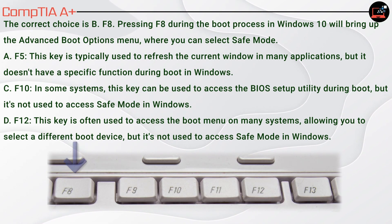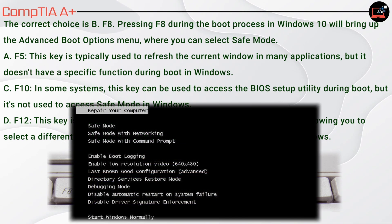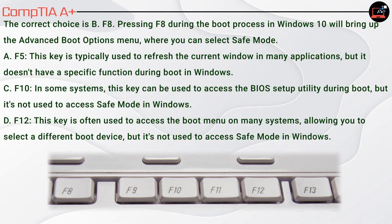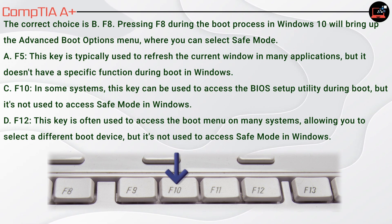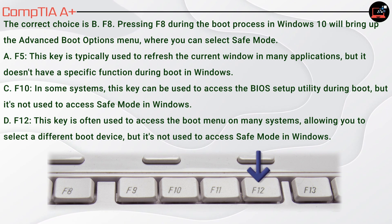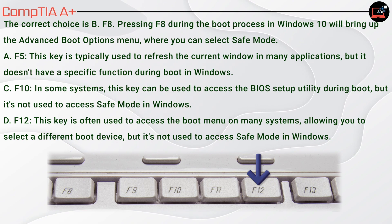The correct choice is B, F8. Pressing F8 during the boot process in Windows 10 will bring up the advanced boot options menu where you can select safe mode. A, F5 — this key is typically used to refresh the current window in many applications, but it doesn't have a specific function during boot in Windows. C, F10 — in some systems this key can access the BIOS setup utility during boot, but it's not used to access safe mode. D, F12 — this key is often used to access the boot menu to select a different boot device, but it's not used to access safe mode in Windows.